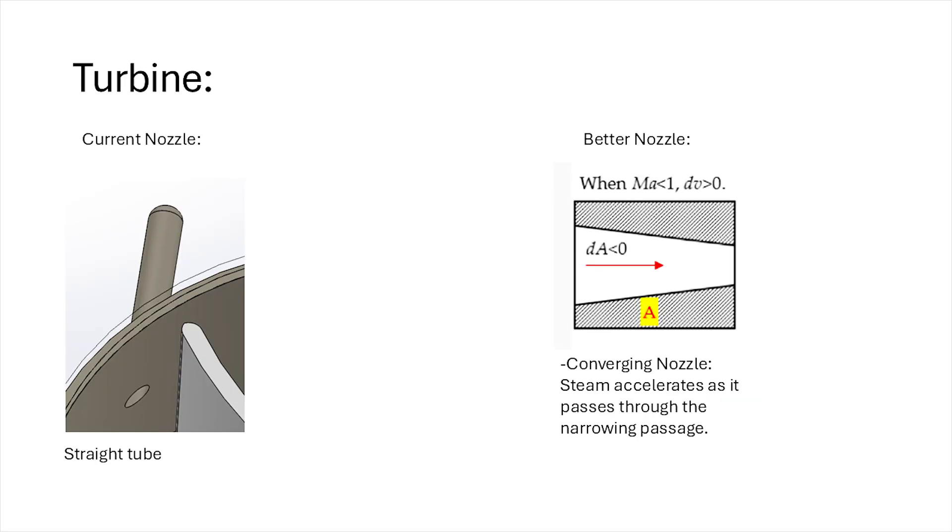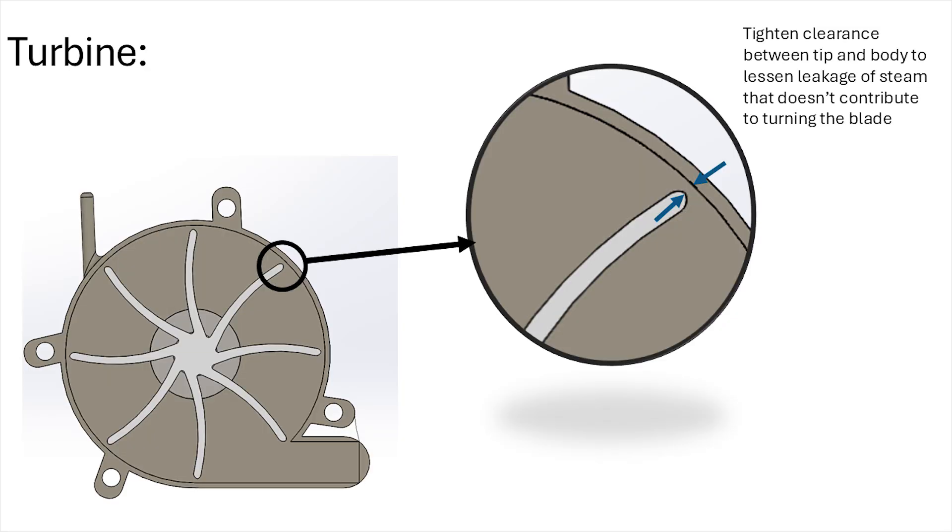Moving on to the turbine and starting with the inlet, for our low-speed application, a better nozzle design would probably be a converging nozzle, since the narrowing would help to accelerate the steam. Another thing to look at is the clearance between the tips of our blade and the body, since the bigger the clearance, the more steam that's going to leak and not contribute to turning the blade.